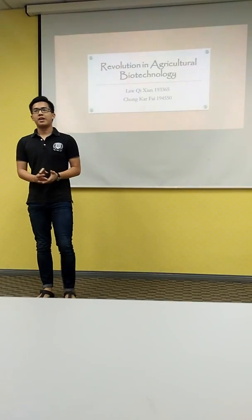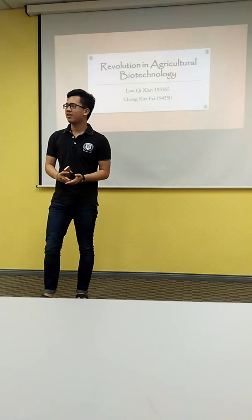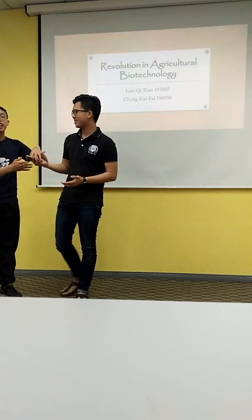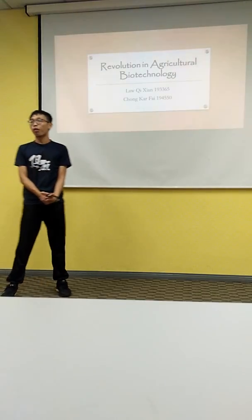Hello, my name is Lao Chi Xin and my metric number is 192365, and this is my partner. My name is Chong Ka Fei with metric number 194550. Our brand does mean it to all.